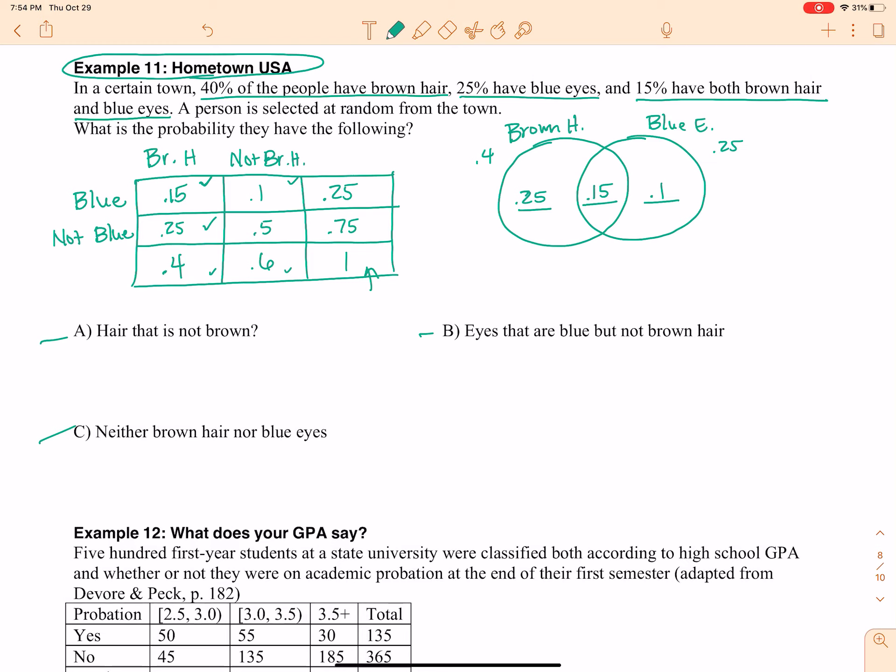And now we can use either one or both of them to answer A. Hair that is not brown. What is the probability a single person selected from this town does not have brown hair? Well, let's look at the people who do not have brown hair. That would be these people right here. So the probability that they don't have brown hair, that's going to be 0.6.